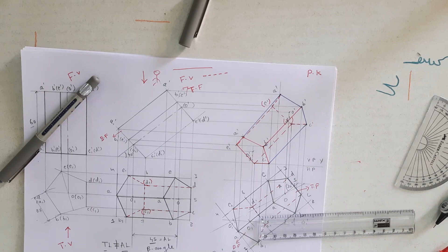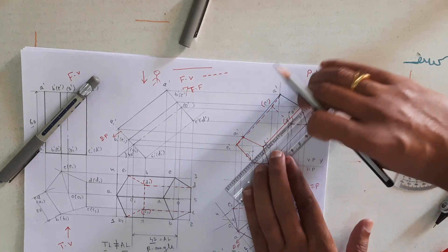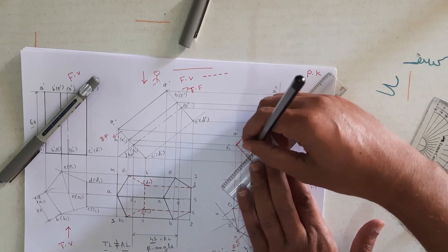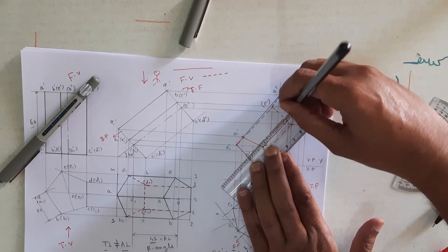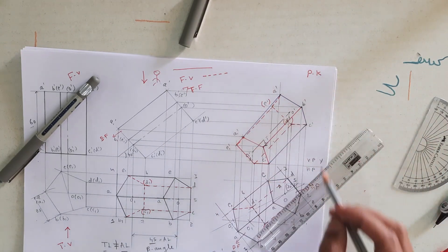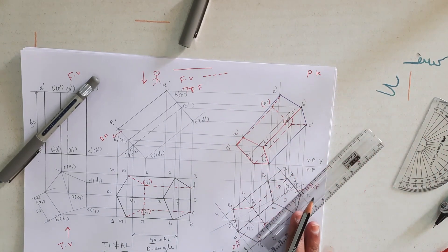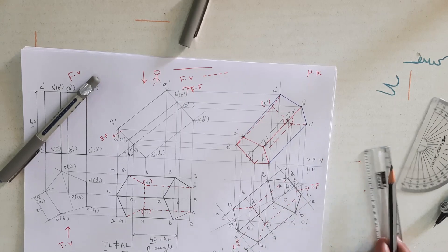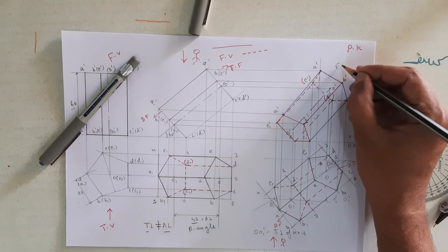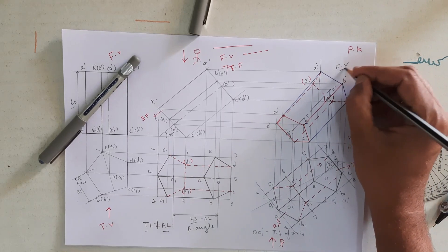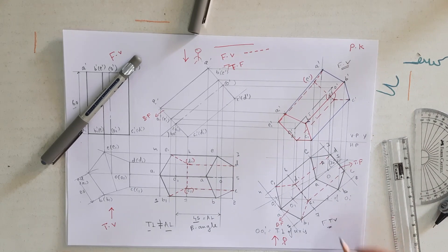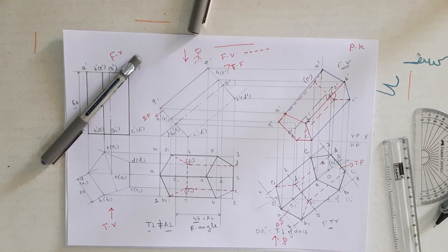At last, we have to represent the axis — that is very important, otherwise you will lose marks. I have drawn this in pen for clarity — please draw it with a pencil. This is the final front view and this is the final top view. Thank you. Namaste.